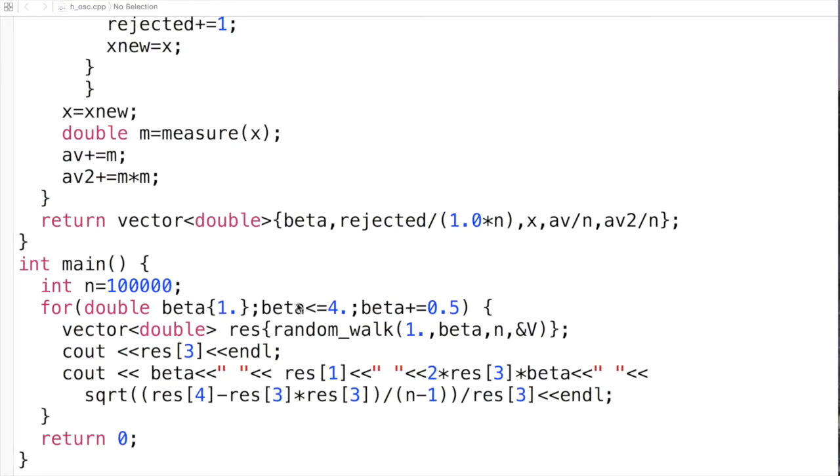And then we've got a loop over beta. And for beta is one to four with steps of a half. And what we do over there, essentially we just grab the result of the random walk, which we put in a vector, and then we can just address those things.